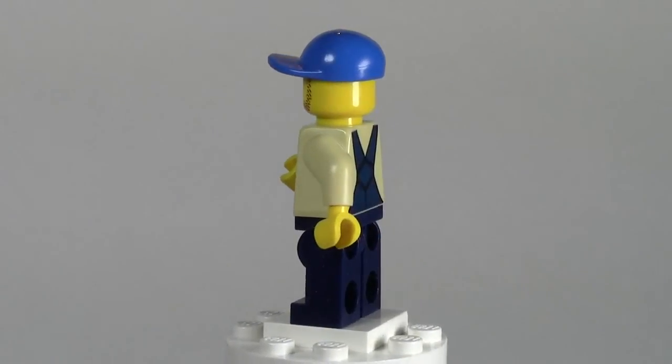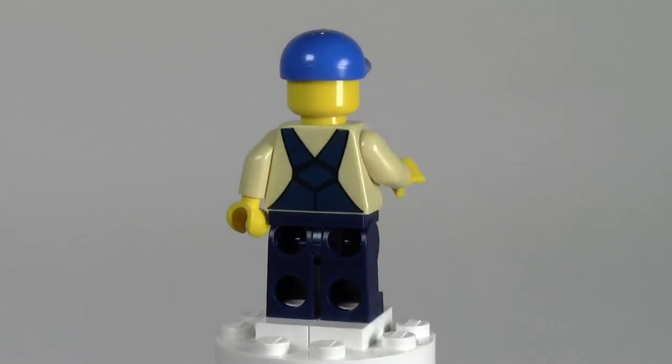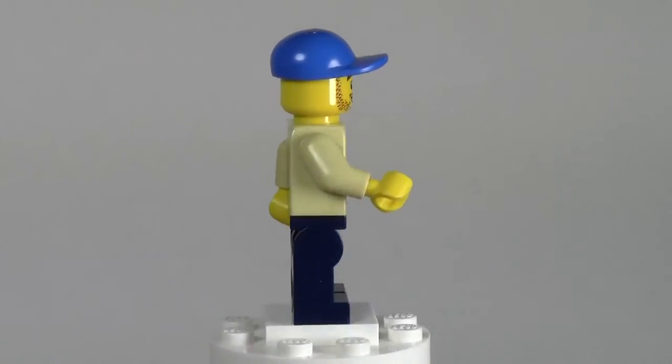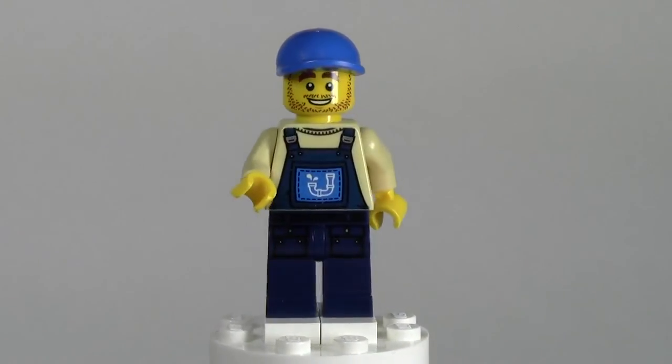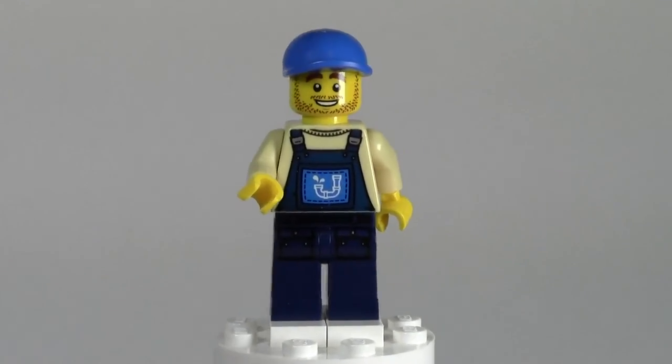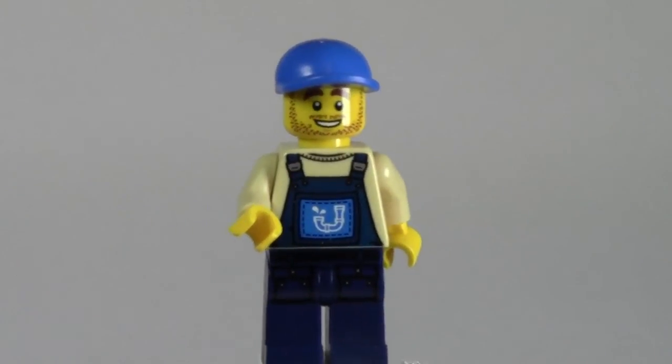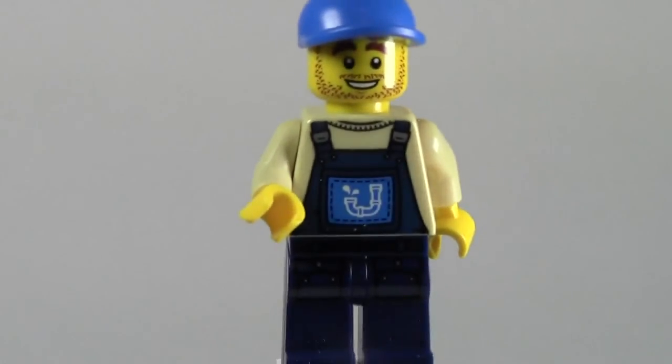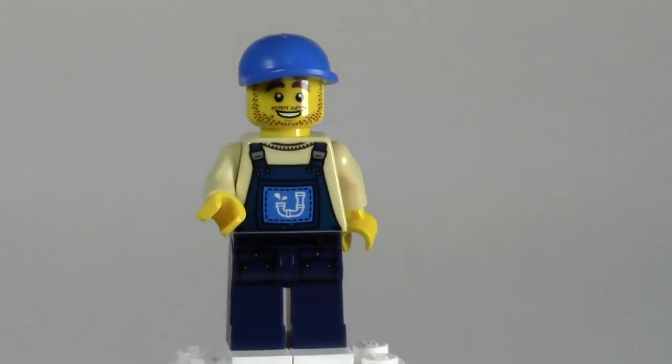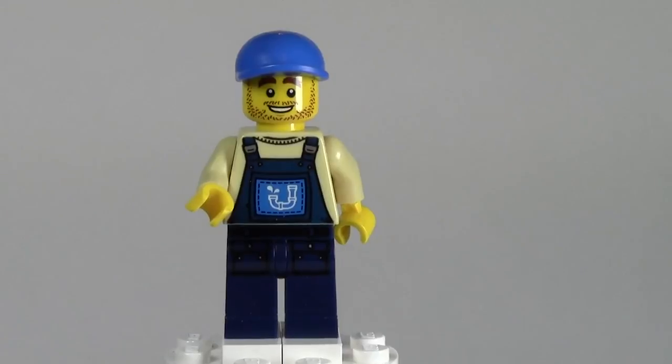The coveralls look like they continue down to the pant with printing. No printing on the sides, but continued printing on the back. He's wearing a blue ball cap and he's got a cool little Plumber Joe face. Here are close-ups on all the prints, just so you can see.